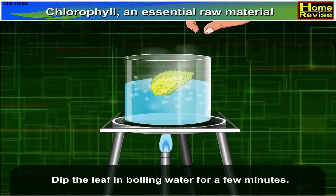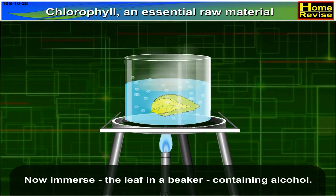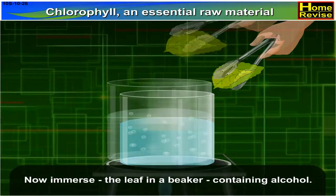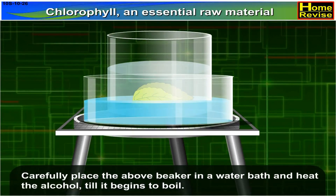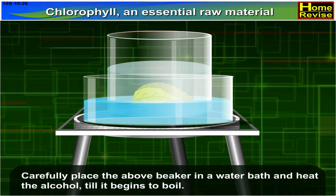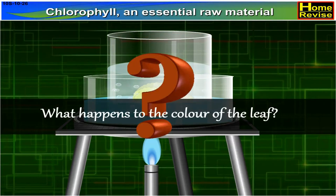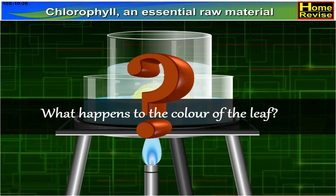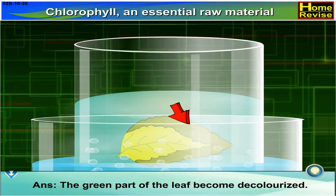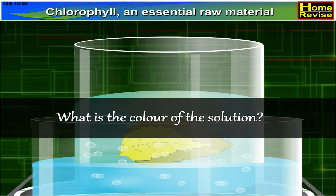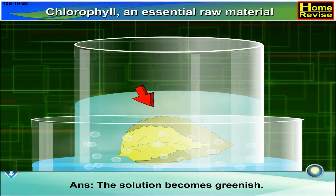Dip the leaf in boiling water for a few minutes. Now, immerse the leaf in a beaker containing alcohol. Carefully place the beaker in a water bath and heat the alcohol till it begins to boil. What happens to the color of the leaf? The green parts of the leaf become decolorized. What is the color of the solution? The solution becomes greenish.